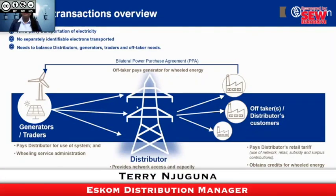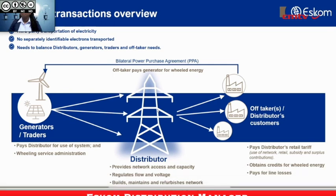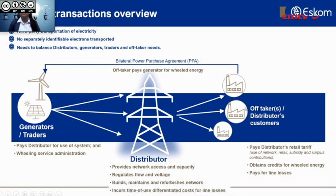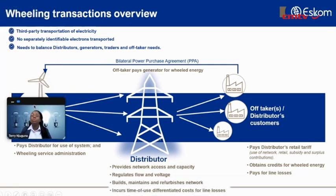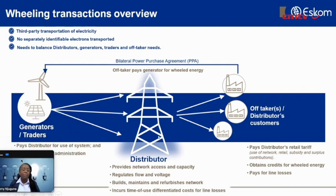There are three main players. The first is the generator or traders, the distributor who provides the network, as well as the offtakers who are normally the distributor's customers.